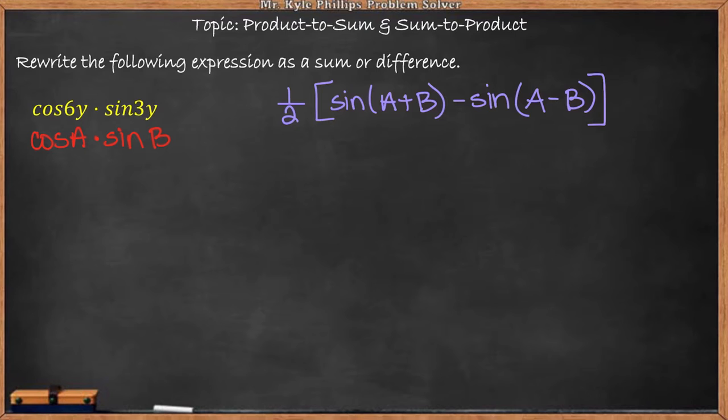So what we're going to do is A and B are going to come from our initial question. Everywhere I see an A I'm going to plug in 6y and everywhere I see B I'm going to plug in 3y.